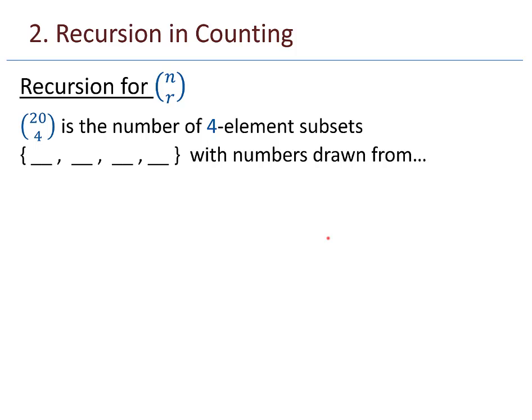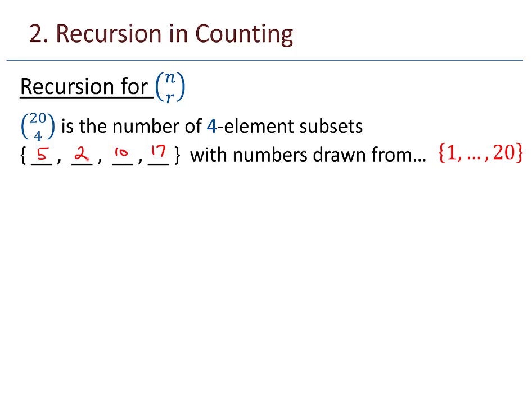How about a recursive formula for combinations, n choose r? 20 choose 4 is the number of four-element subsets with numbers drawn from 1 through 20. In this case, a set might look like {2, 5, 10, 17}. But since order doesn't matter, we write it in numerical order from least to greatest.